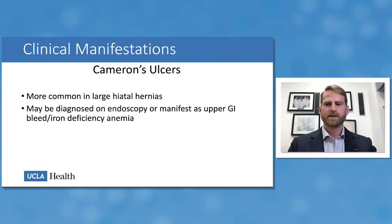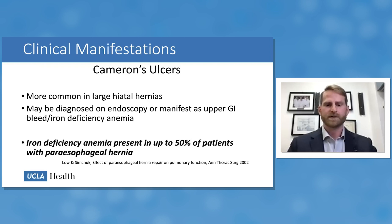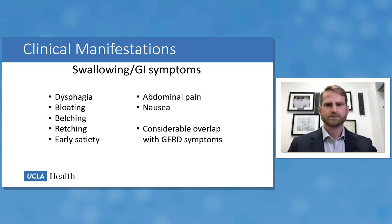Cameron's ulcers may present clinically as upper GI bleeding or iron deficiency anemia, or may be diagnosed incidentally during endoscopy. One study found that up to 50% of patients with paraesophageal hernias have iron deficiency anemia, both as a result of Cameron's ulcers and as a result of chronic intermittent volvulus resulting in mucosal ischemia.